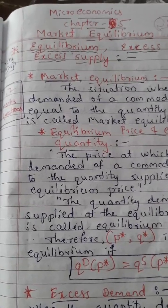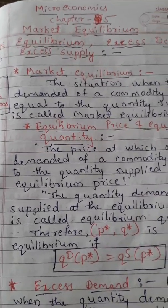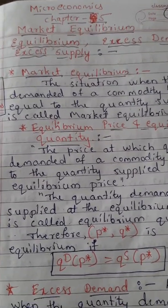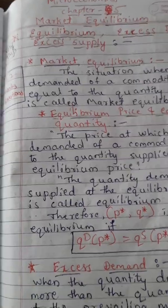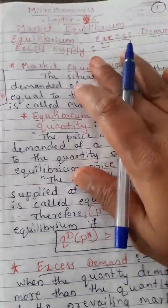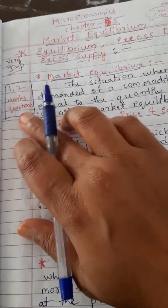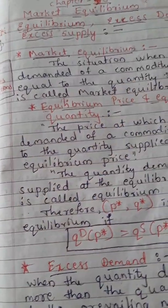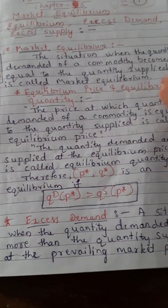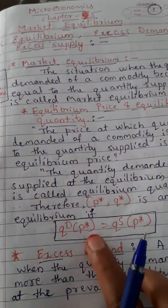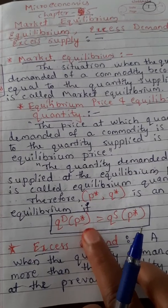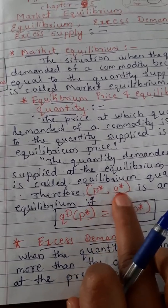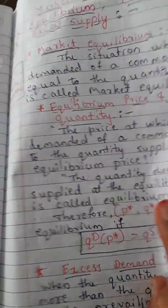Hello students. In the last video we discussed about microeconomics Chapter 5, market equilibrium. We covered the meaning of market equilibrium, excess demand, excess supply, equilibrium price and quantity. The formula used is QD equal to QS, where P star is the equilibrium price and Q star is the equilibrium quantity.